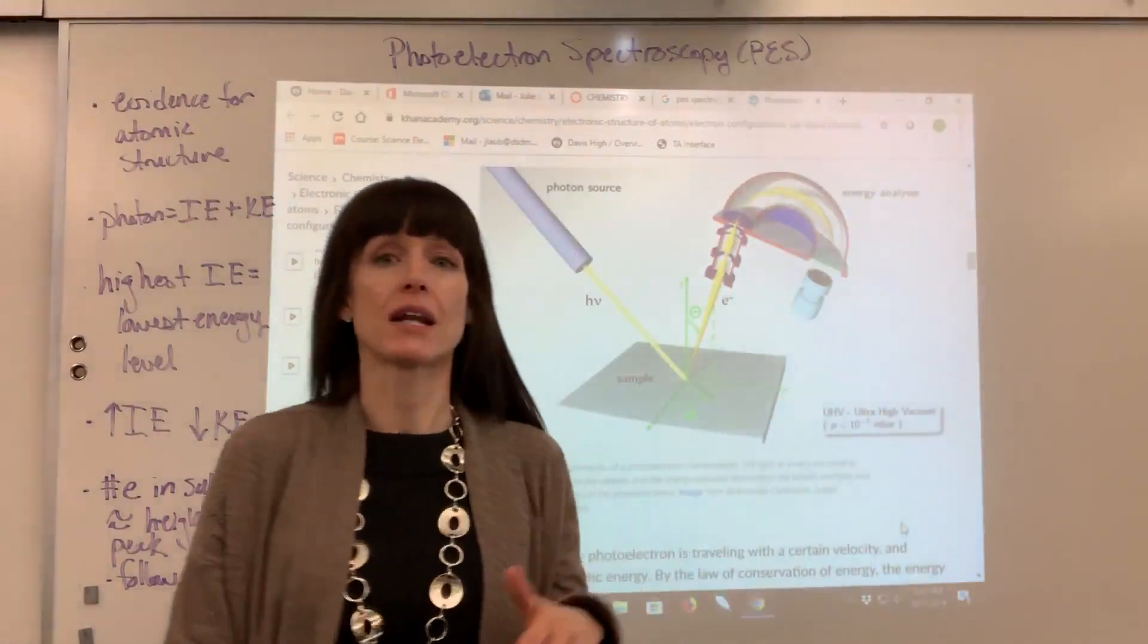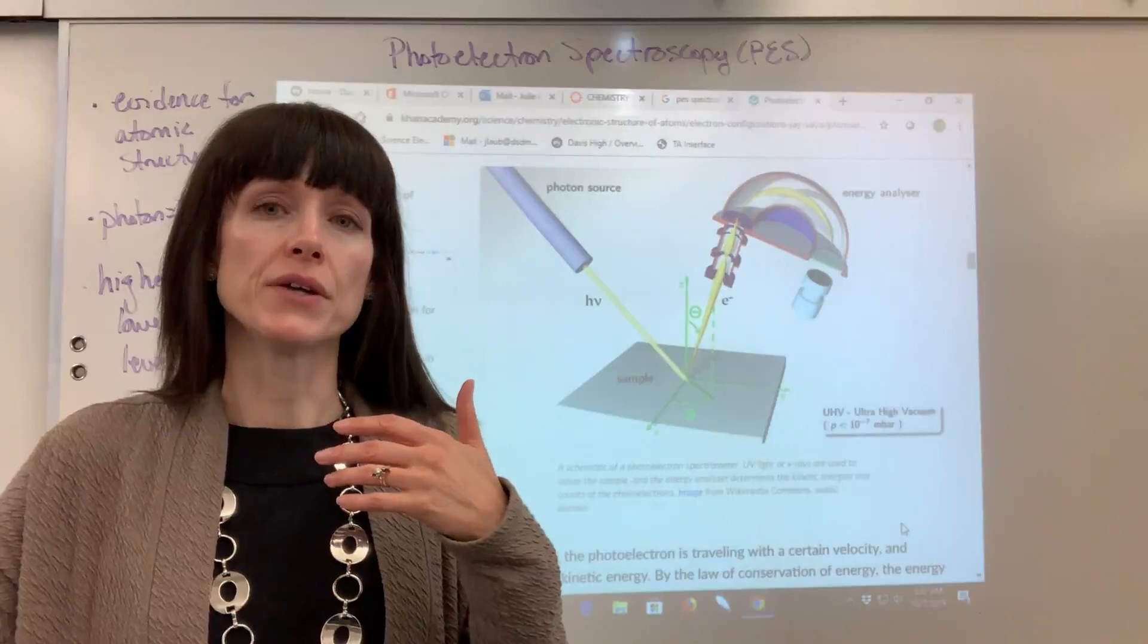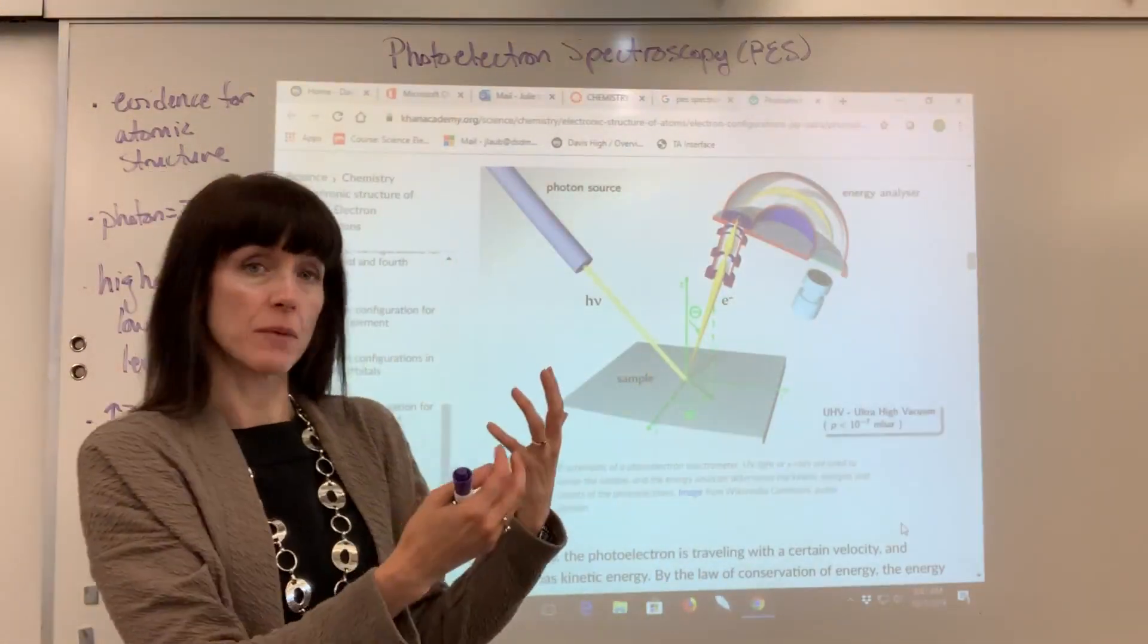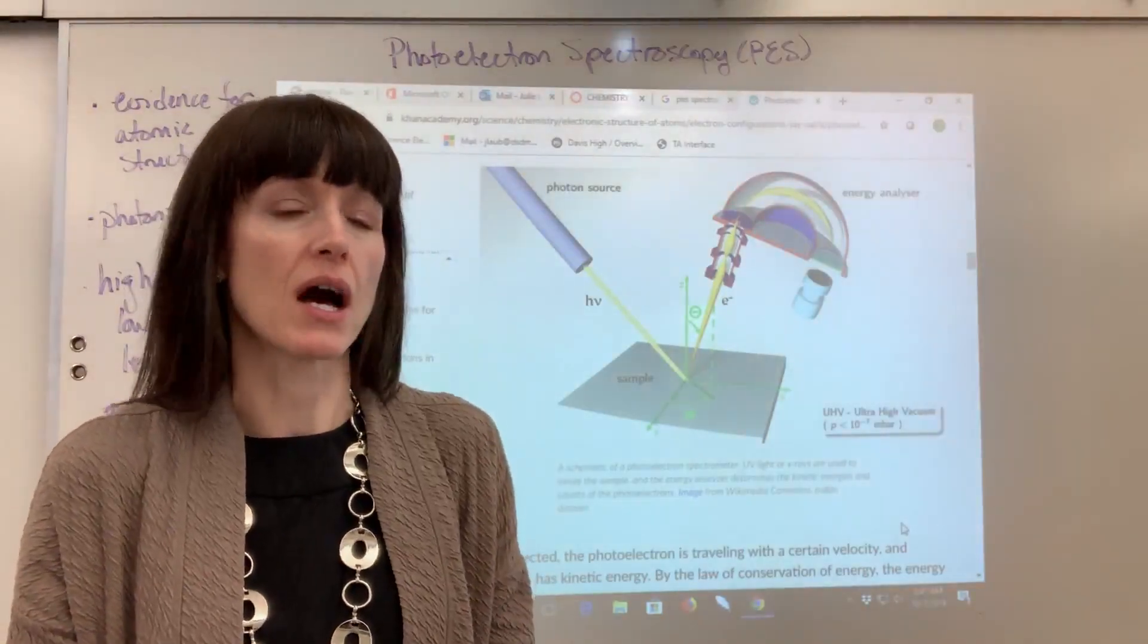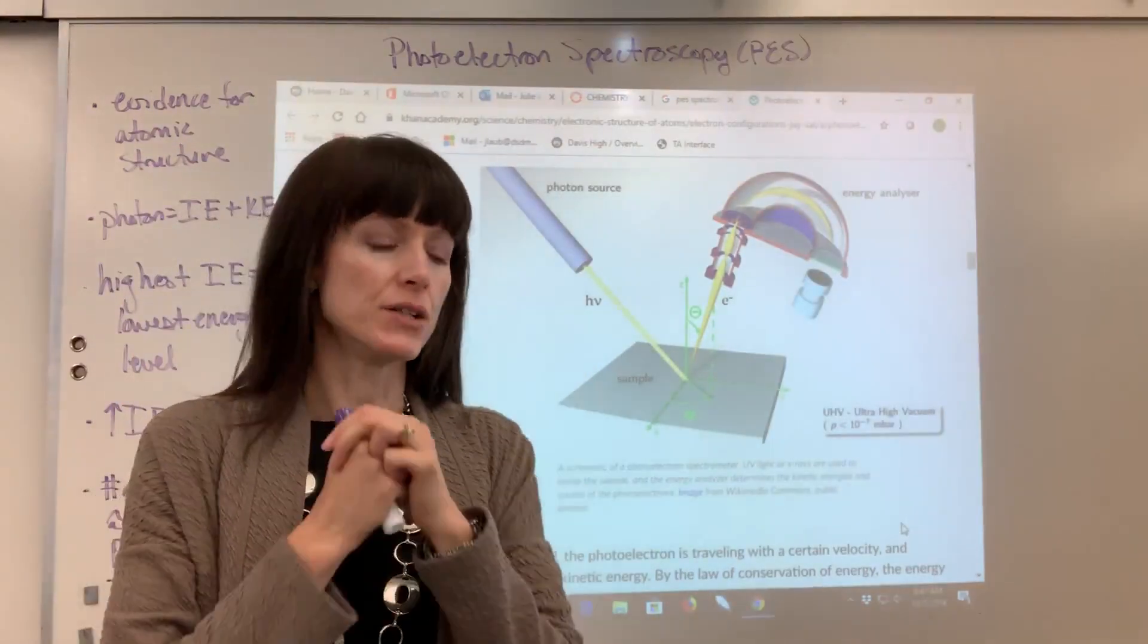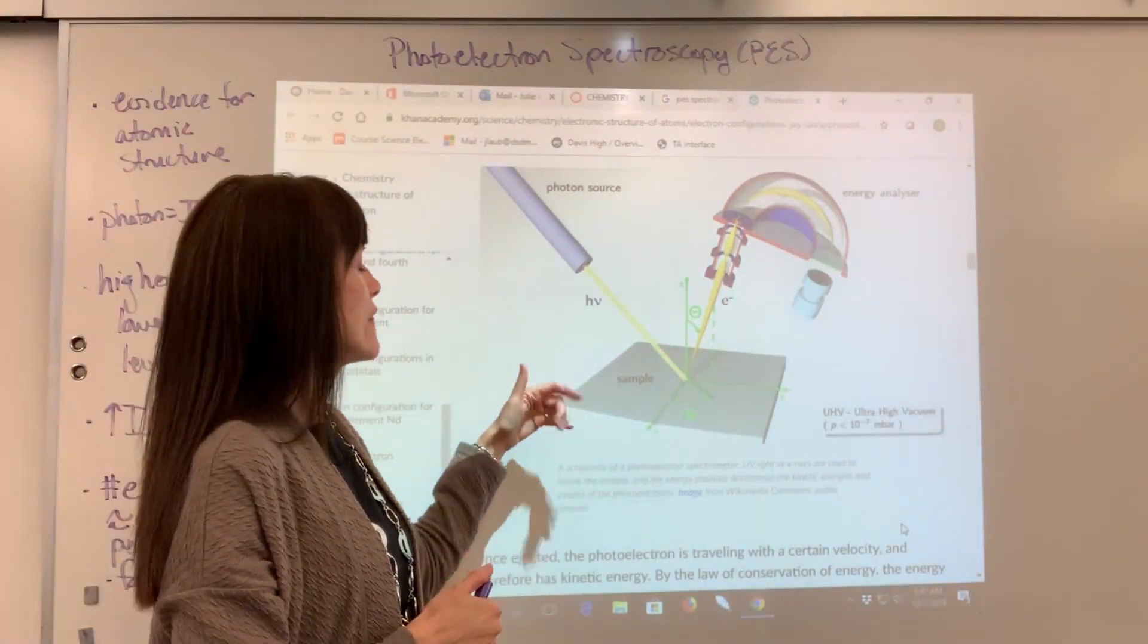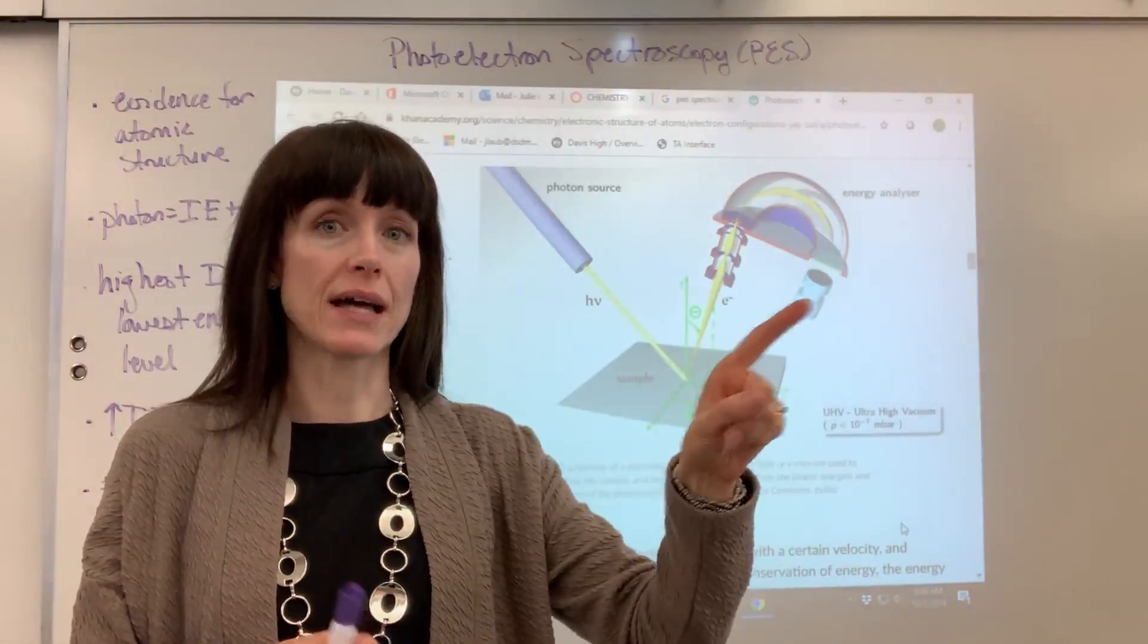This is from Khan Academy. I'd recommend to Google this. They've done a great job. It's not a video, it's an article that you can read, but they do an excellent job. Khan Academy always does great. So here we have the actual PES experiment. You're going to have some light source and it's going to be high energy, like an X-ray, a high energy light source. So you hit your sample. It's going to be in this box and you have your gas sample in there and you radiate it. We're going to hit it with some light. And then that energy, when it hits the atom, comes into contact with the atom, it will eject one electron.